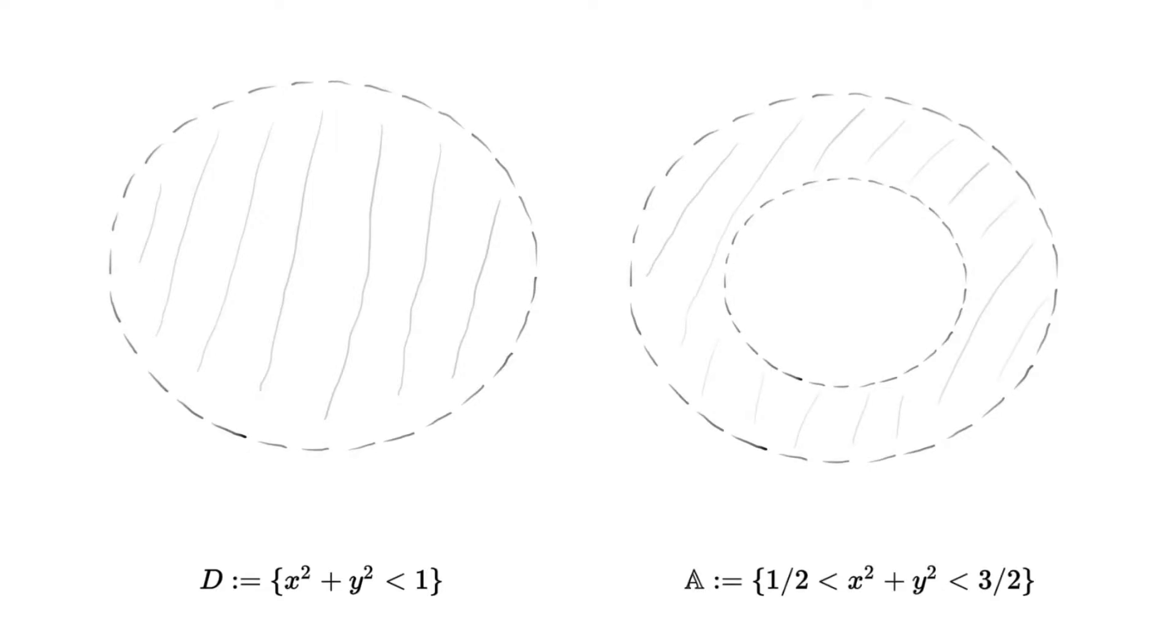As subsets of the plane, A and D both inherit the Euclidean topology from R2. Our goal as topologists is to classify topological spaces. In this particular case, even though A and D look very different, one could imagine that there's some sophisticated homeomorphism that identifies the two.